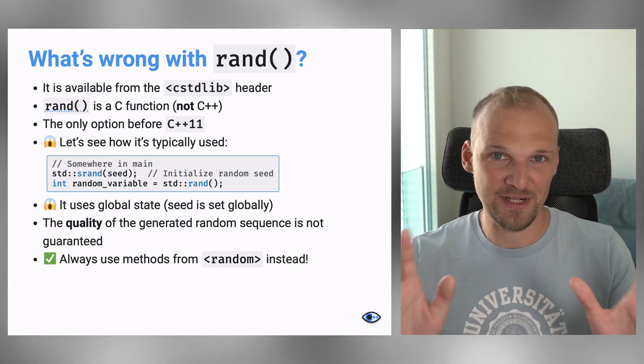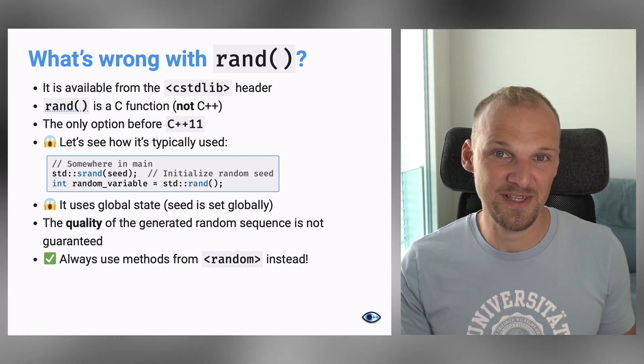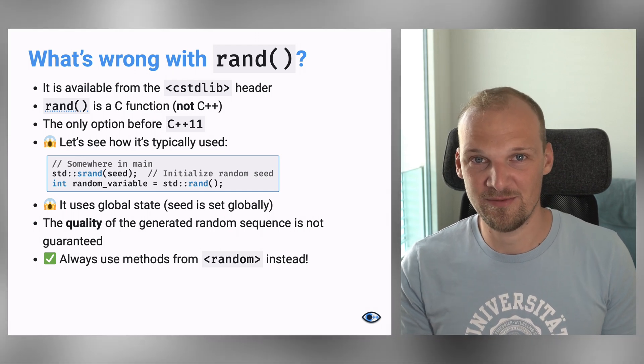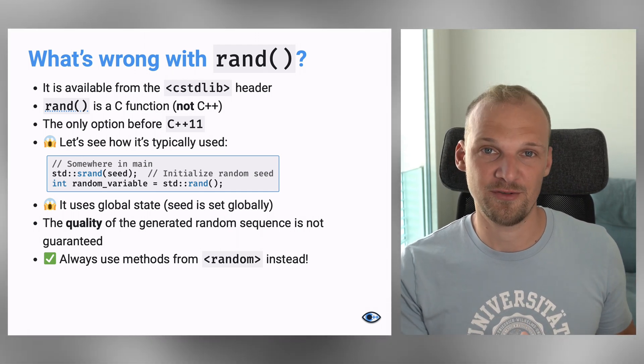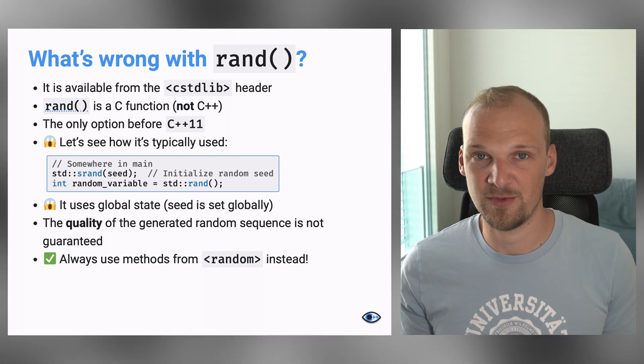Well, let's first start what it is, right? In case you didn't hear about it, rand is a function that actually comes from C. So, it's available from cstdlib header in C++. And it was actually the only option to generate random numbers in C++ before C++11 came to be.